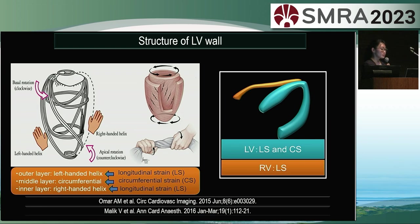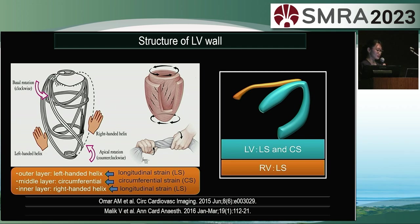First, let's review the structure of the left ventricular myocardium. The left ventricular myocardium can be divided into three layers. The innermost and outermost layers consist of vertically oriented fibers, while the middle layer consists of fibers that run circumferentially. We will evaluate each motion as longitudinal and circumferential strains. In the left ventricle, both longitudinal and circumferential strain play a role, while in the right ventricle, longitudinal strain is mainly involved.